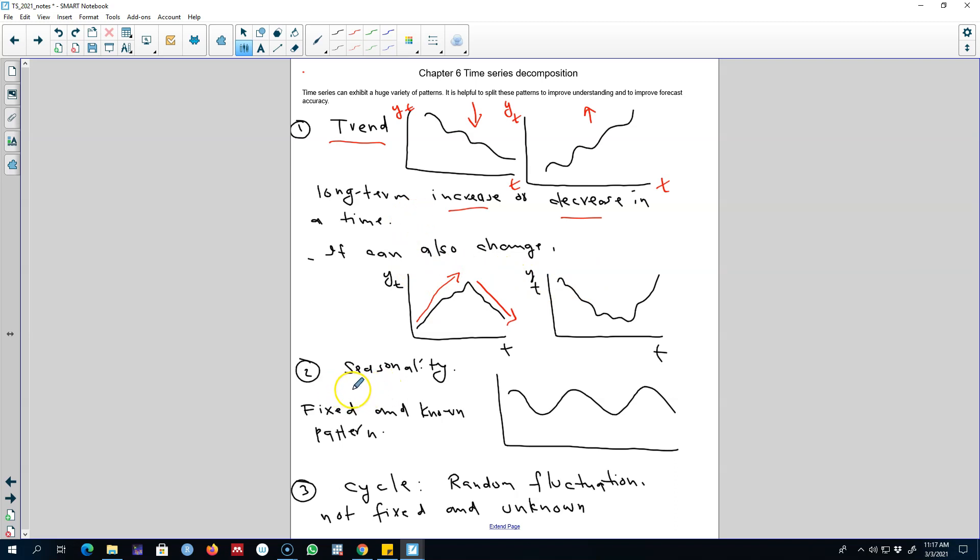The second pattern that we may observe is called seasonality, where we observe ups and downs that are of fixed and known frequency. This type of pattern emerges in a series because of seasonality in the data set.